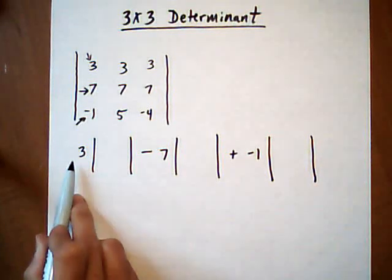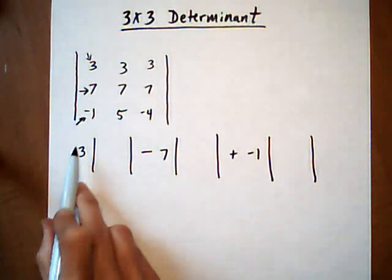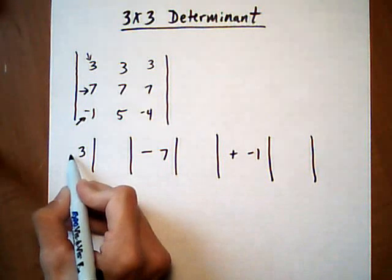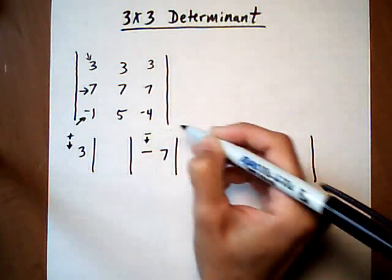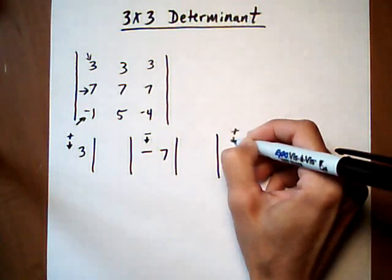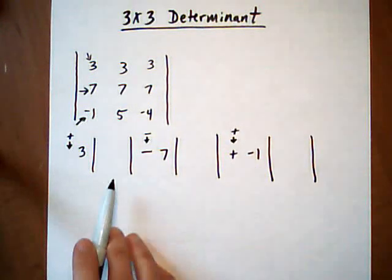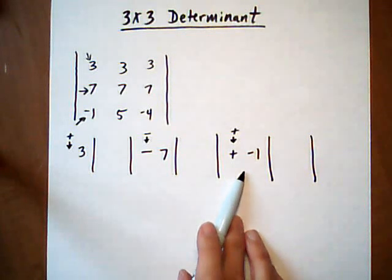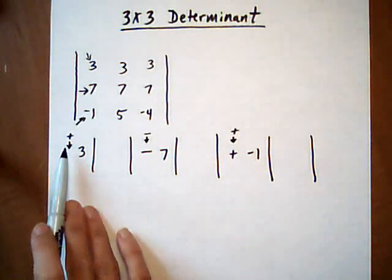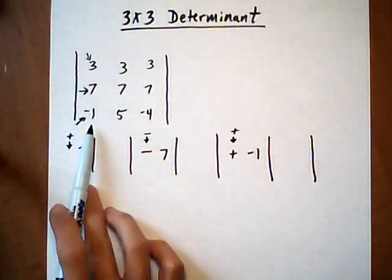Now one thing I want you to be aware of is that the sign when you expand like this always goes the same. You have a positive here, negative or take away here, and an add here. Sometimes you can add a negative which will make it turn into a subtraction, but you always want to go plus minus plus when you're expanding around this left column.